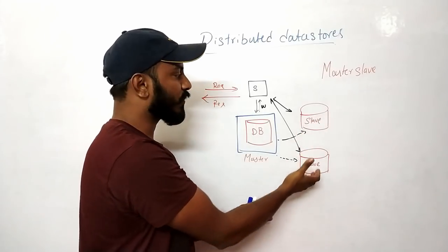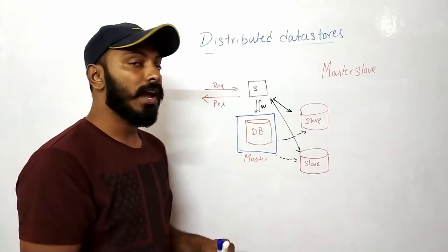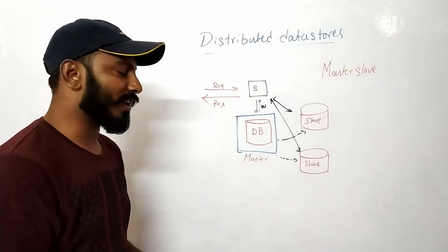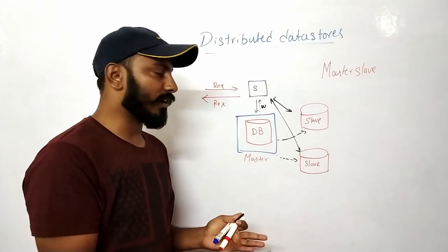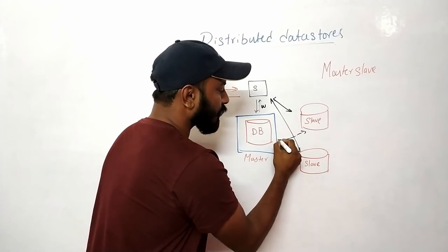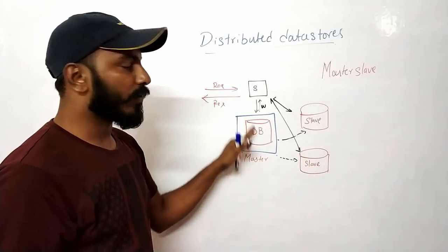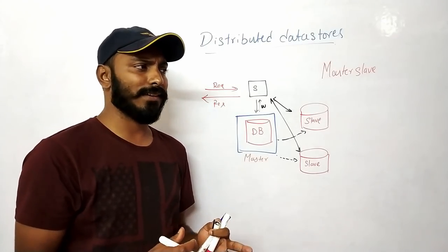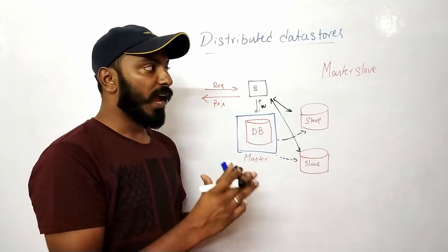We can add more slaves to handle more reads, since applications typically have fewer writes and more reads. In our word-to-PDF app, conversions are less frequent, but users often query their conversion history. However, the problem is if a user writes something and immediately reads that data, they read from a slave — and if replication hasn't happened yet, the data won't be there. The user sees an inconsistency.